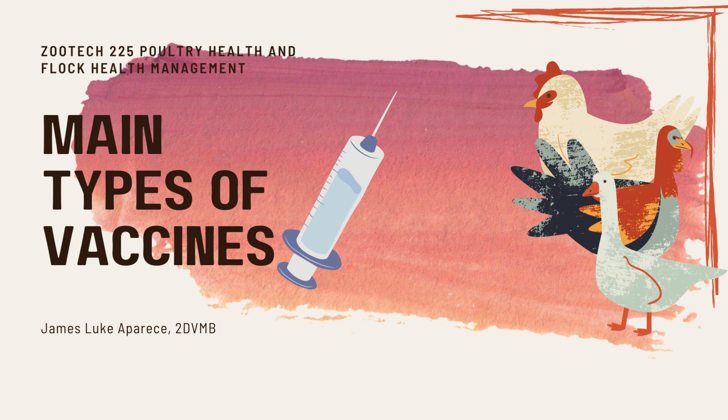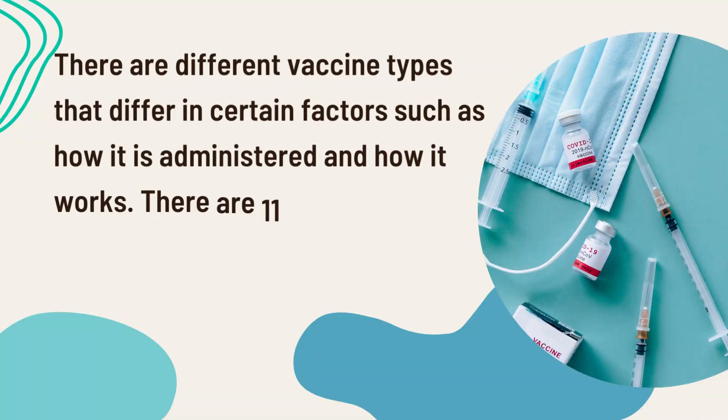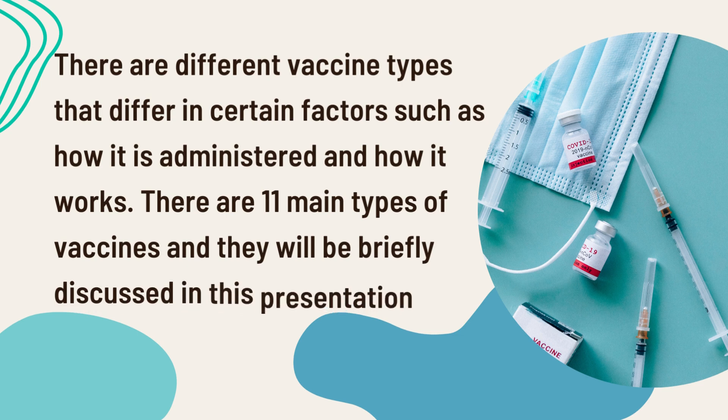Good day. My name is James Ducchi Aparase from 2DVMB Group 7, and I'm here to report on the main types of vaccines as part of Assignment 1 of ZOOTEC 225, Poultry Health and Block Health Management. Vaccines come in different shapes and sizes and have differing factors such as how they are made and how they work. In this presentation, we will be briefly discussing 11 main types of vaccines.